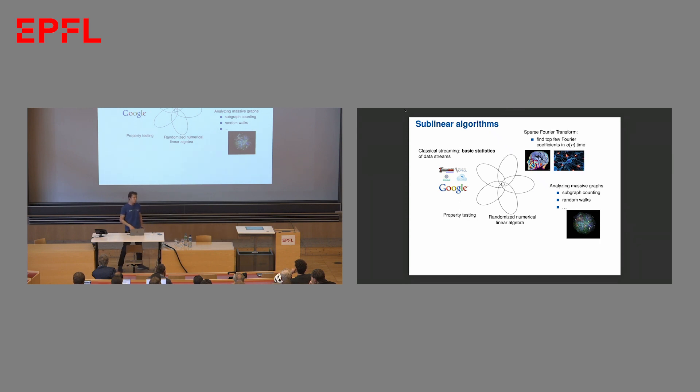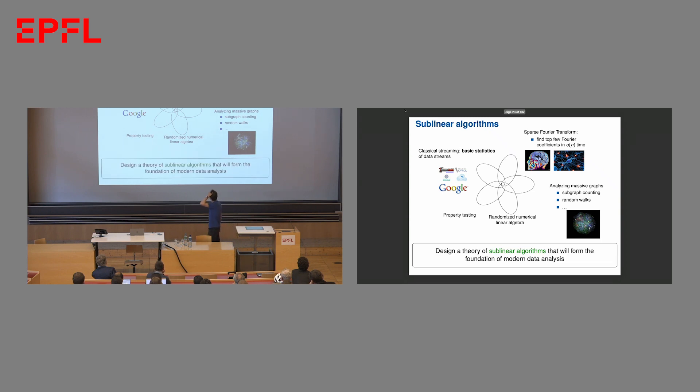Randomized techniques from sublinear algorithms have found their way into numerical linear algebra and revolutionized the way we think of solving linear regression on big data. A lot of the data that we get come in the form of graphs. So we're interested in designing graph analysis primitives, like subgraph counting for social network analysis, performing random walks for recommendation systems, getting a sense of proximity between nodes. What we do in our lab is design a theory of sublinear algorithms that will answer these challenges and form the foundation of big data analysis. Our focus is on processing massive graphs and sparse Fourier transform related questions.